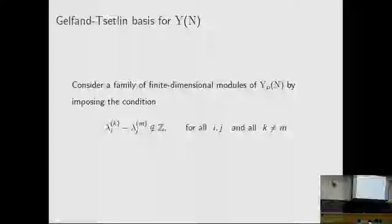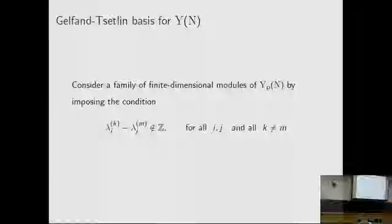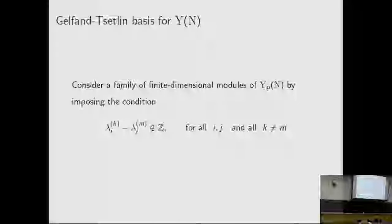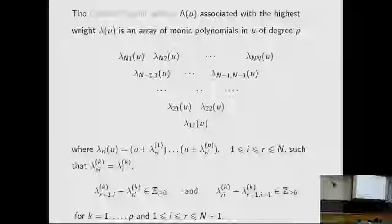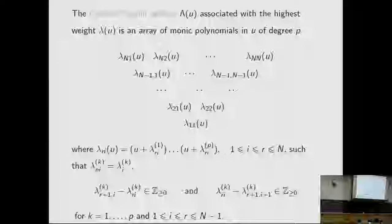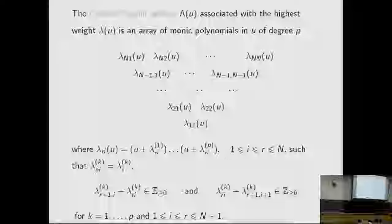Consider a family of finite-dimensional modules of the Yangian of level P by imposing the condition that lambda_{ik} minus lambda_{jm} is not an integer for any i, j and for all k not equal to m. The Gelfand-Zeitlin tableau lambda(u) associated with the highest weight lambda(u) is an array of monic polynomials in u of degree P.